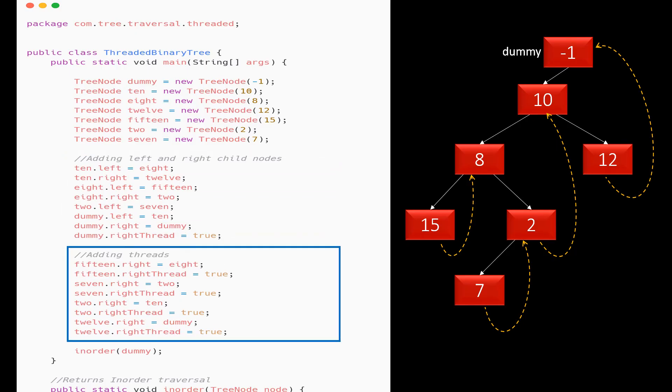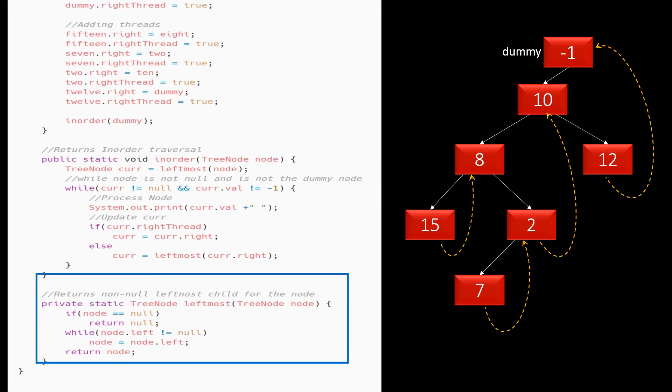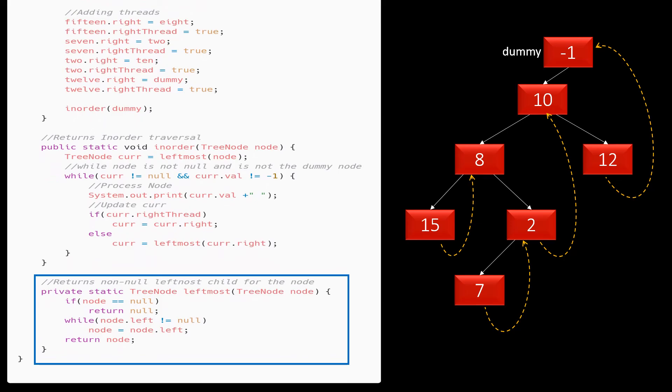This is the part that creates the parent-child association. And, here is the part that creates the predecessor-successor relationship. This is the method that gives the non-null leftmost child for a node. It loops while the left is not null and returns the node.